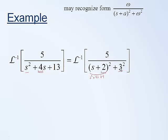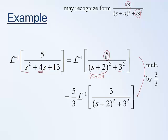The reason we did that is it gives us a form that looks like the damped sinusoid example we saw earlier. Looking at this, we have omega^2 in the denominator and we want omega in the numerator — so we want a 3, not a 5. To achieve that, we multiply the numerator and denominator by 3, which is equivalent to multiplying by 1 and does not change the expression. We bring the constant out front using the linearity property.